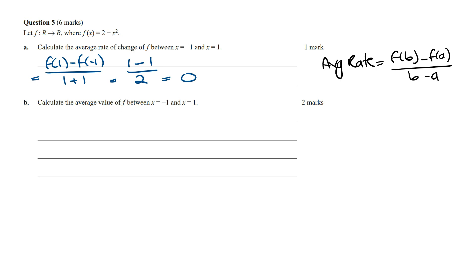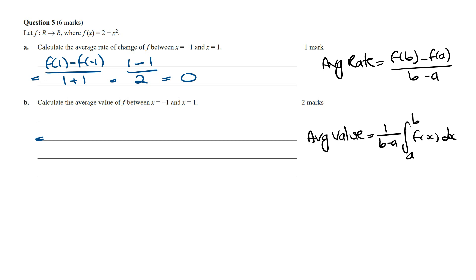Calculate the average value of f between x equals minus 1 and x equals 1. To find the average value of a function between a given interval we need to use this formula. So this is going to equal a half times the integral from minus 1 to 1 of f of x, which is 2 minus x squared, dx.